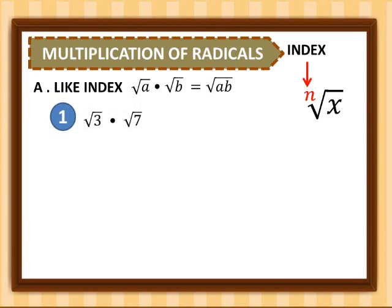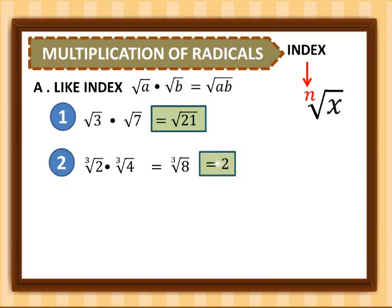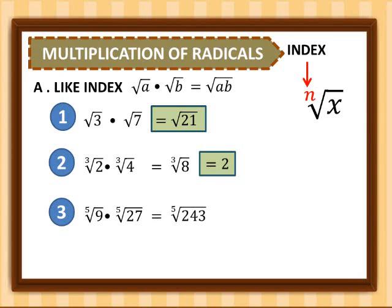First example: square root of 3 times square root of 7 gives us square root of 21. Second example: cube root of 2 times cube root of 4 gives us cube root of 8, which simplifies to 2. Third example: 5th root of 9 times 5th root of 27 gives us 5th root of 243, which simplifies to 3.